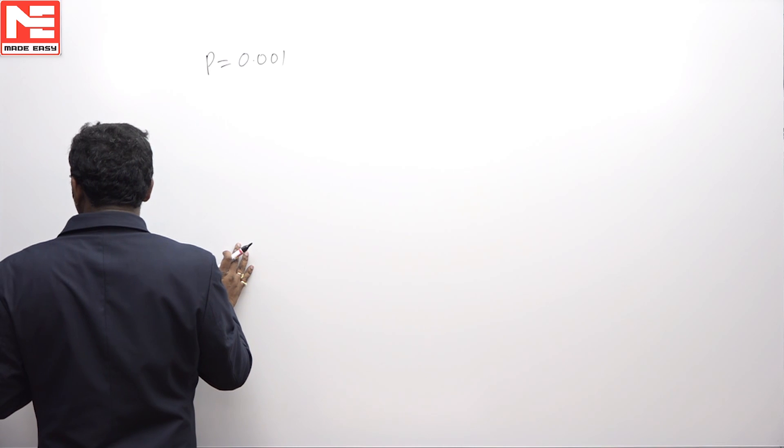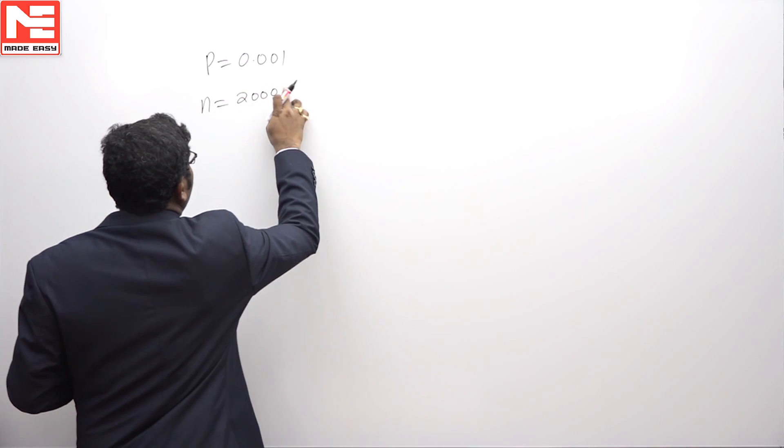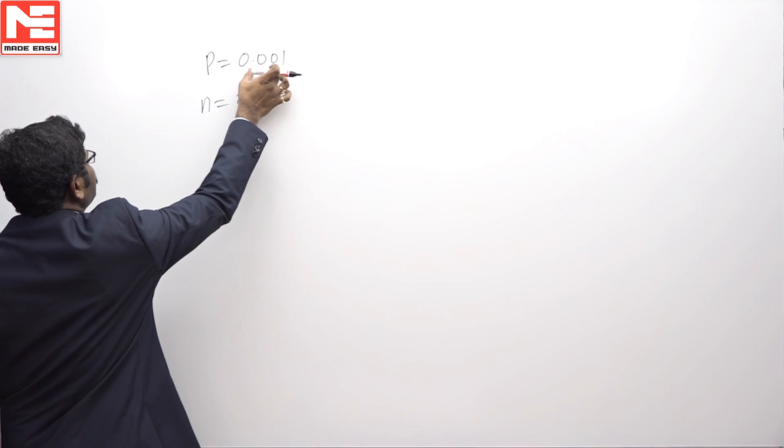We need to find the probability that out of 2000 individuals, more than 2 will get a bad reaction. Here N equals 2000, so N is a large number and P is very, very small.